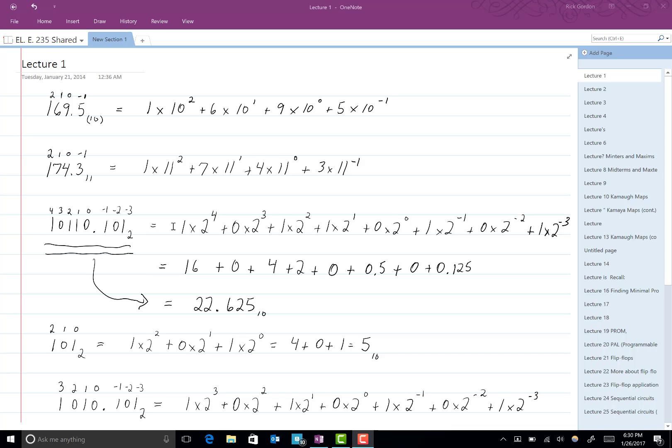This is then 1 times the base, which is 2. 1 times 2 to the 4th, plus 0 times 2 cubed, plus 1 times 2 squared, plus 1 times 2 to the 1st power, plus 0 times 2 to the negative 1 power, plus 0 times 2 to the negative 2 power, plus 1 times 2 to the negative 3 power.